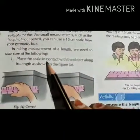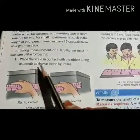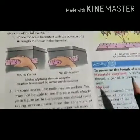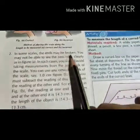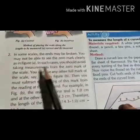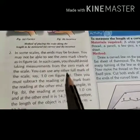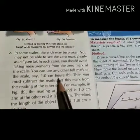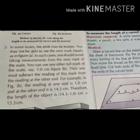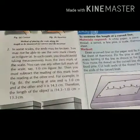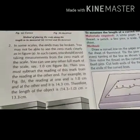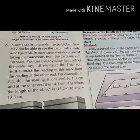When taking measurements of length, first place the scale in contact with the object along its length as shown in figure 8. Second, in some scales the end may be broken and you may not be able to see the 0 mark clearly, as in figure A. In such cases, avoid taking measurement from the 0 mark; use any other full mark, say 1.0 cm (figure B), then subtract that reading from the reading at the other end. For example, if one end reads 1.0 cm and the other reads 14.3 cm, the length is 14.3 minus 1.0 equals 13.3 cm.